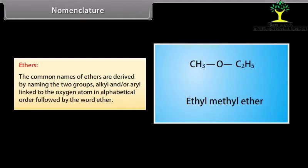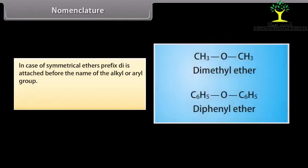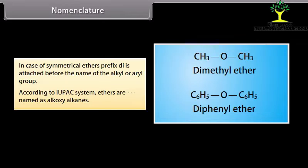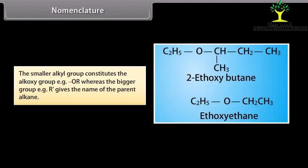Nomenclature of ethers. The common names of ethers are derived by naming the two alkyl and/or aryl groups linked to the oxygen atom in alphabetical order, followed by the word ether. For symmetrical ethers, the prefix di- is attached before the name of the alkyl or aryl group. According to the IUPAC system, ethers are named as alkoxyalkanes — the smaller alkyl group constitutes the alkoxy group (e.g., OR), while the larger group (R') gives the name of the parent alkane.